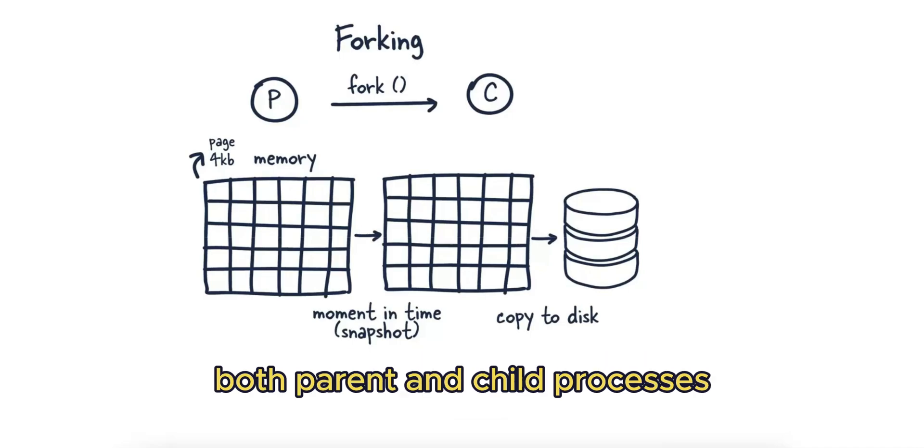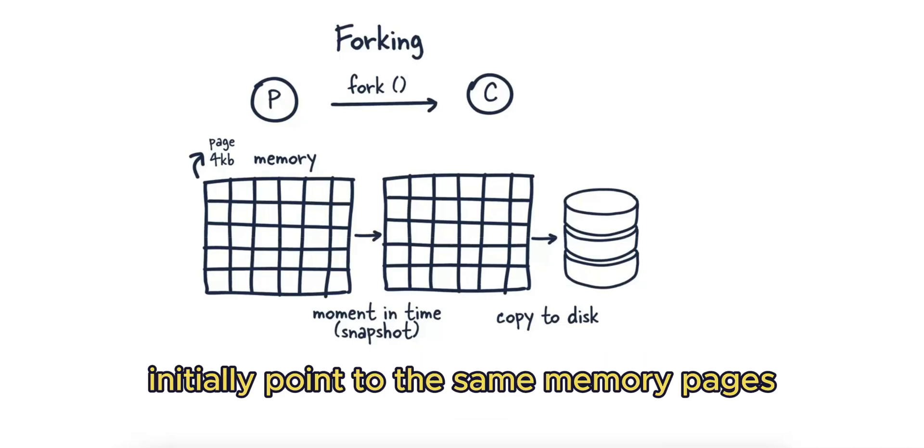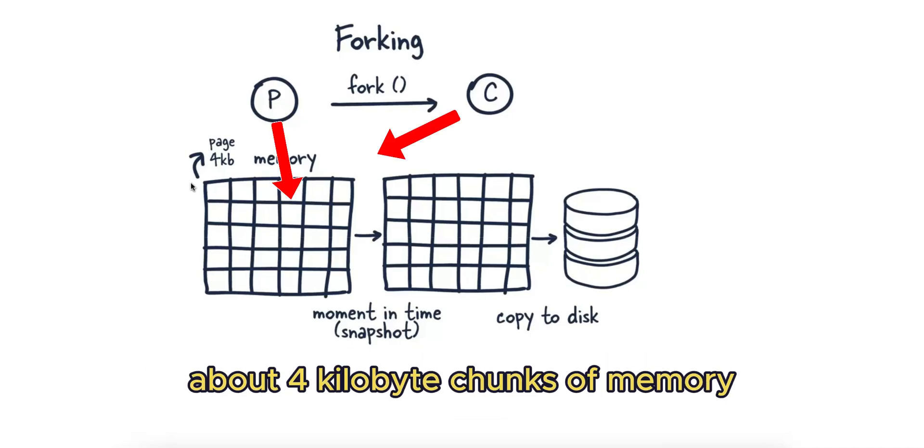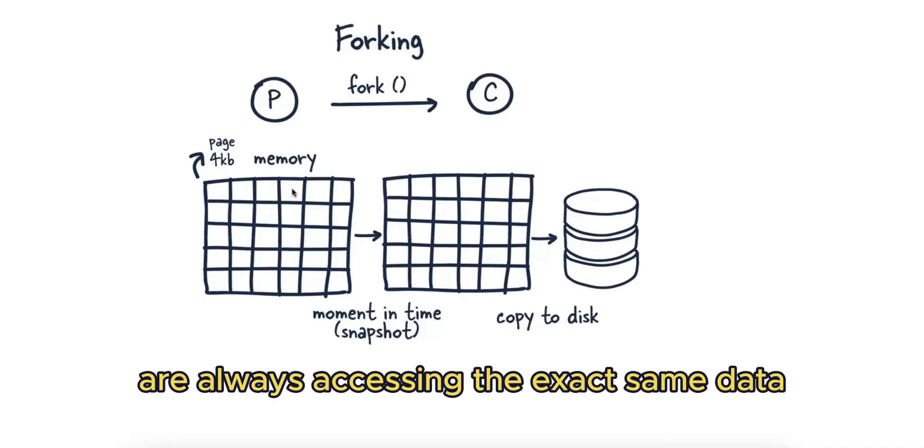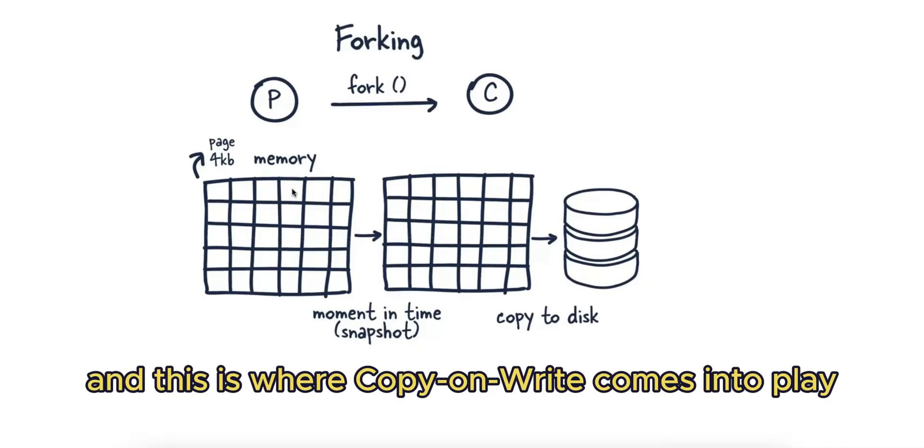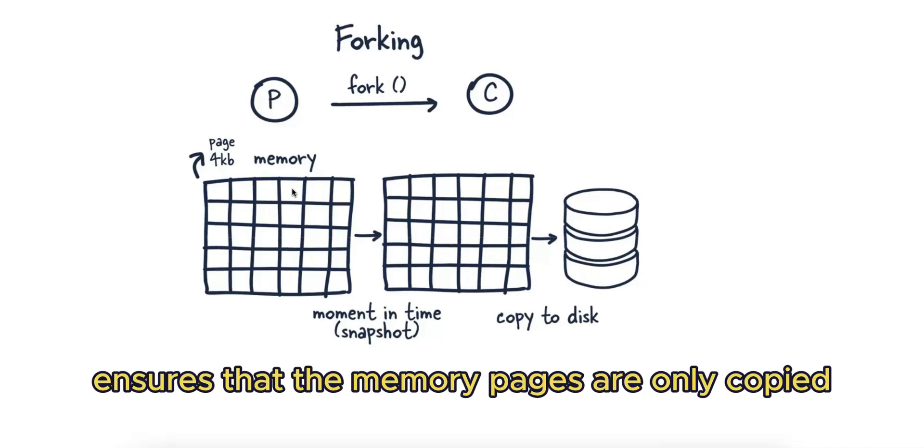Once the fork happens, both parent and child processes initially point to the same memory pages—about 4 kilobyte chunks of memory. However, this doesn't mean that the parent and child are always accessing the exact same data, and this is where copy-on-write comes into play. Copy-on-write ensures that the memory pages are only copied if the parent process modifies them.